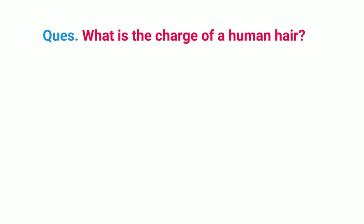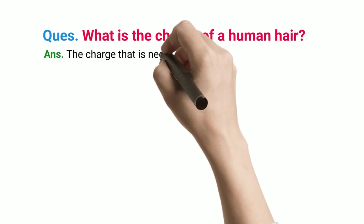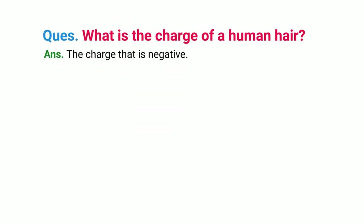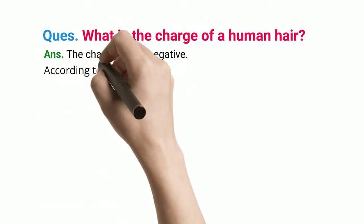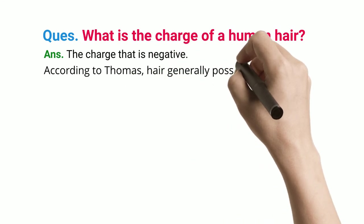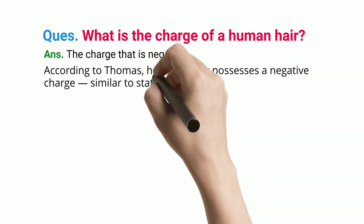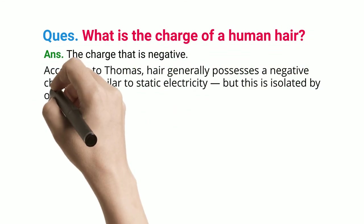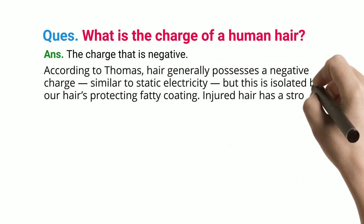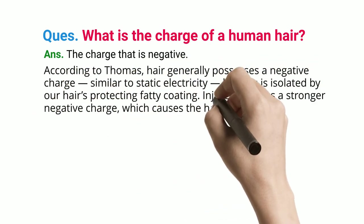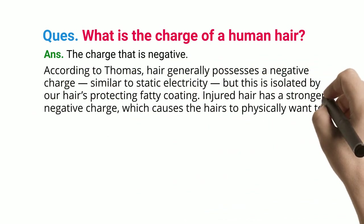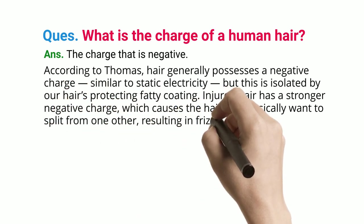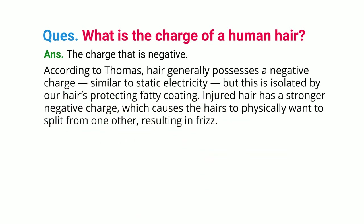Q: What is the charge of human hair? ANS: The charge is negative. According to research, hair generally possesses a negative charge, similar to static electricity, but this is isolated by our hair's protective fatty coating. Damaged hair has a stronger negative charge, which causes the hairs to physically want to split from one another, resulting in frizz.